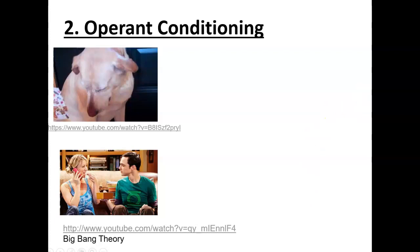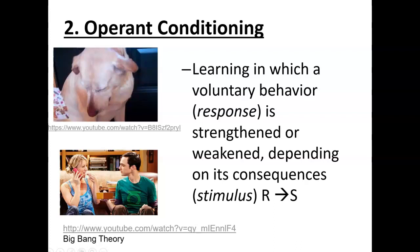So operant conditioning still deals with a response and stimulus relationship. In classical conditioning we have two stimuli and then we have an unconditioned response and a conditioned response. In operant conditioning, the response or behavior comes first, and it's either weakened or strengthened depending on its consequences or the stimulus. I'm going to go over some basic principles of that today, and then we'll look at more examples and processes later on.